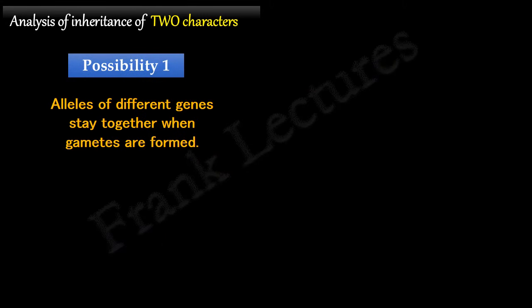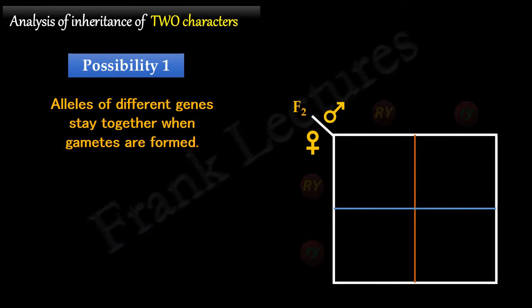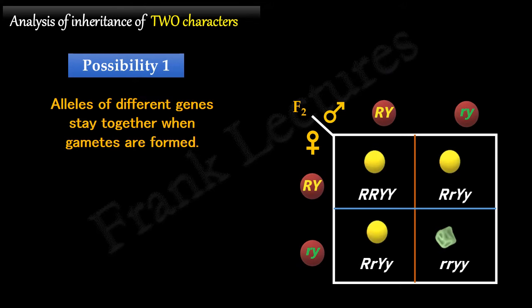Let's draw the Punnett square. According to this first possibility, only two types of phenotypes should be obtained in the F2 generation: plants with round yellow seeds and plants with wrinkled green seeds. Note that these phenotypes are the same as those of the P generation. The phenotypic ratio obtained is 3:1, the same as in a monohybrid cross.